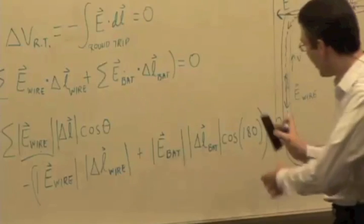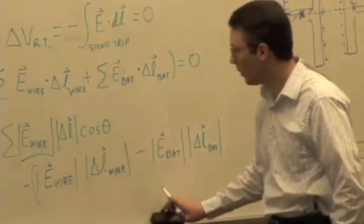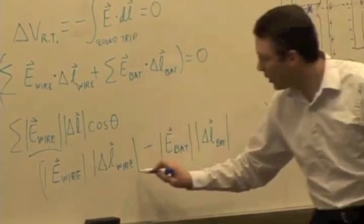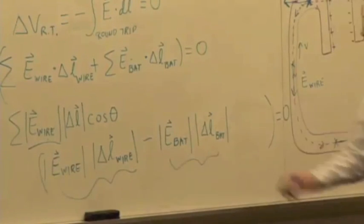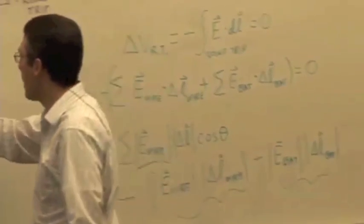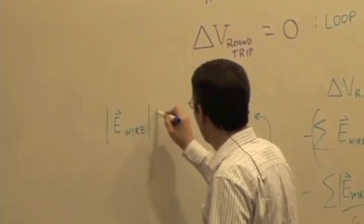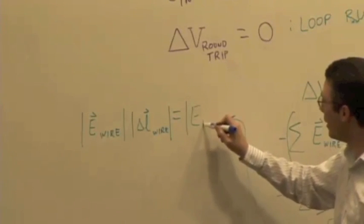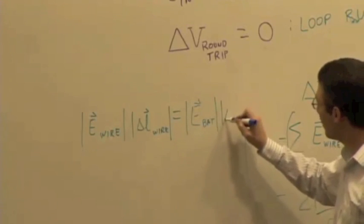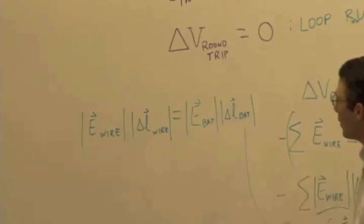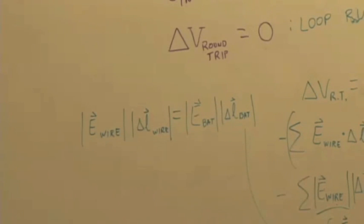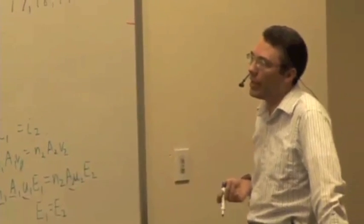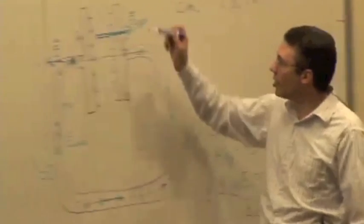Working that out, we get a sign flip from the cosine of 180°, which gives us: E_wire × L_wire = E_battery × L_battery. This is interesting, but we can't go much further with it alone. We can measure the lengths of the wire and the battery, but we can't get anywhere unless we know something about what's going on inside the battery — specifically, we can't directly measure the electric field of the battery.